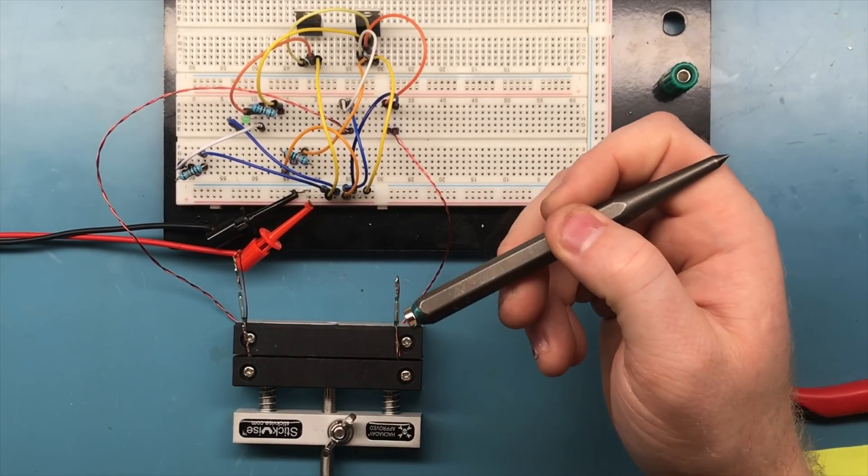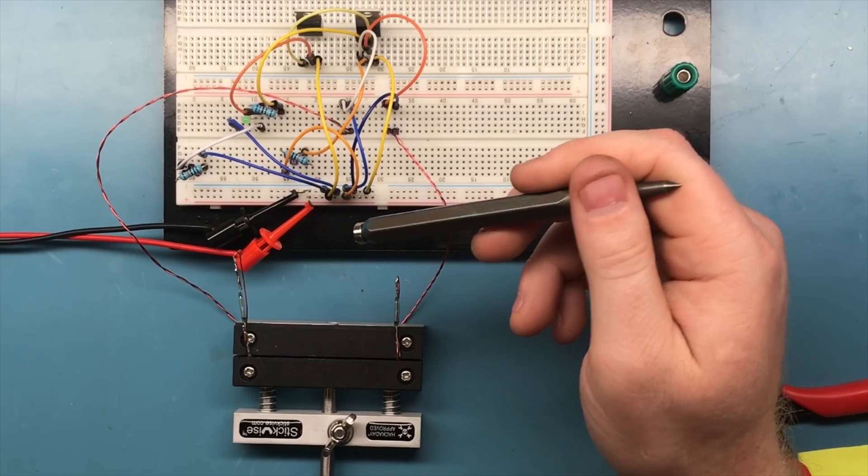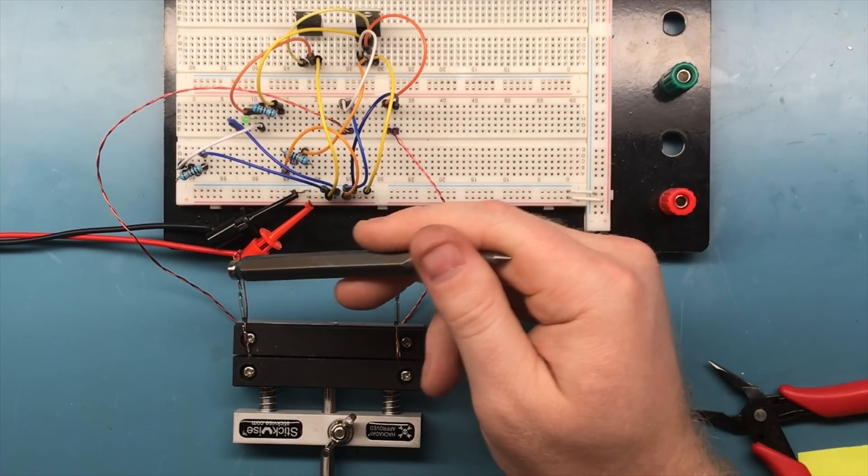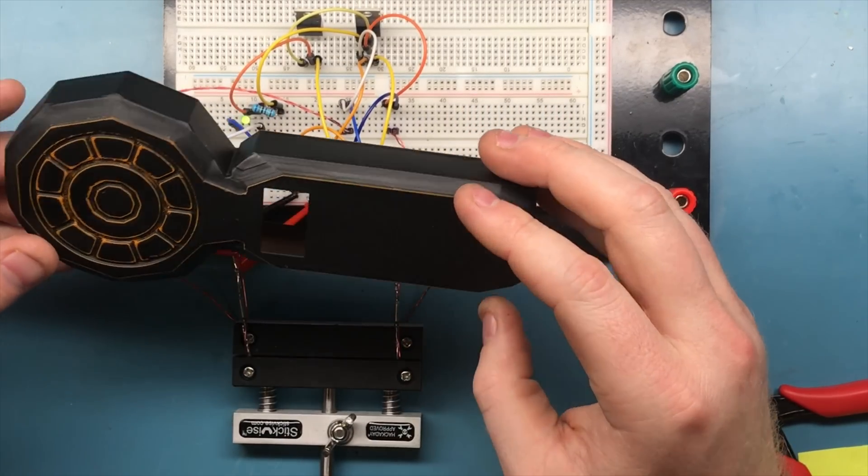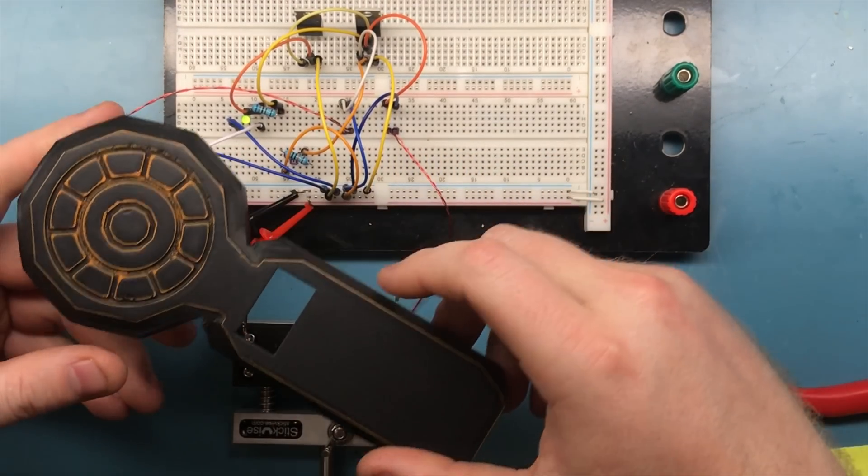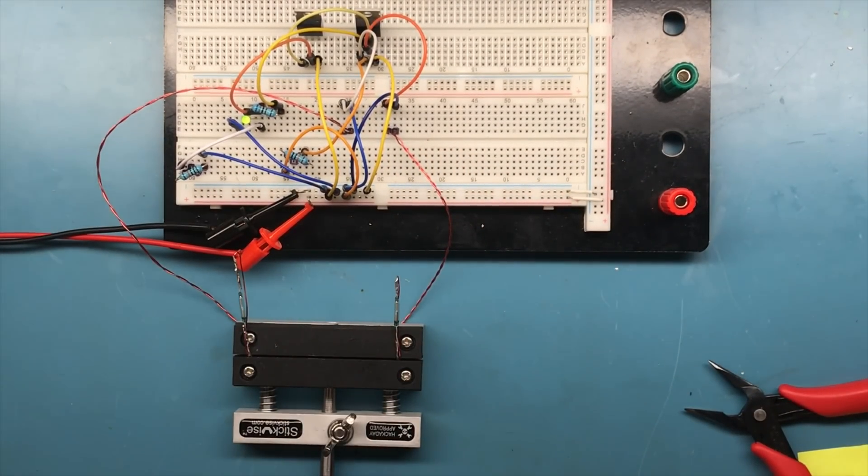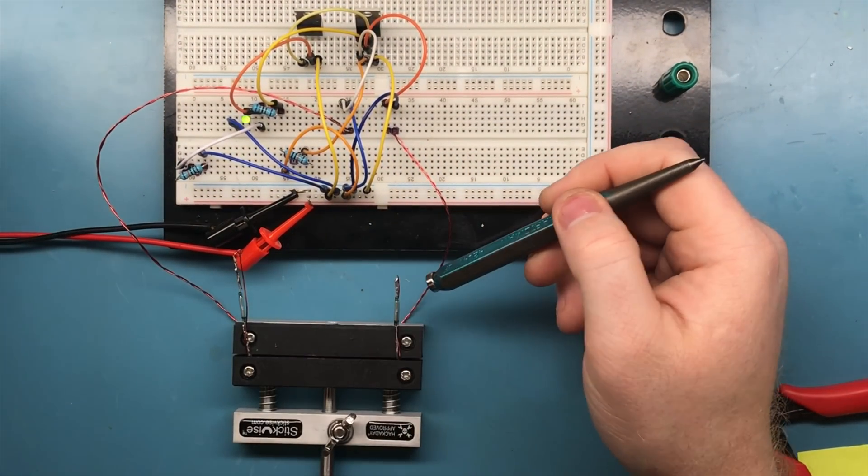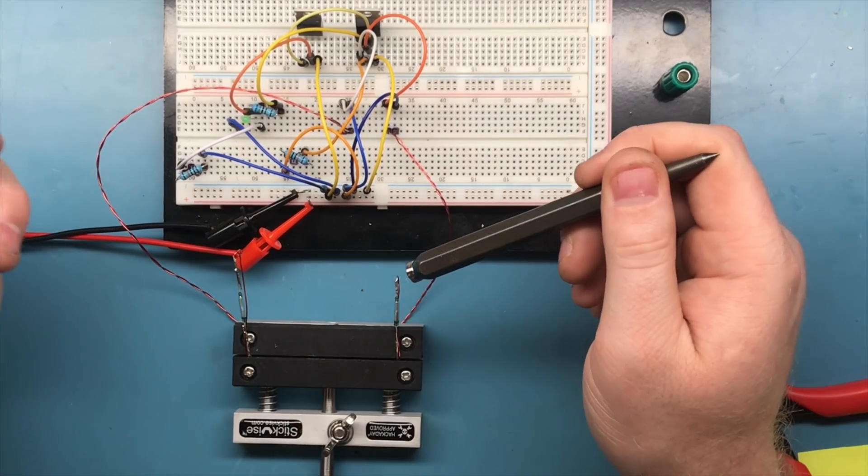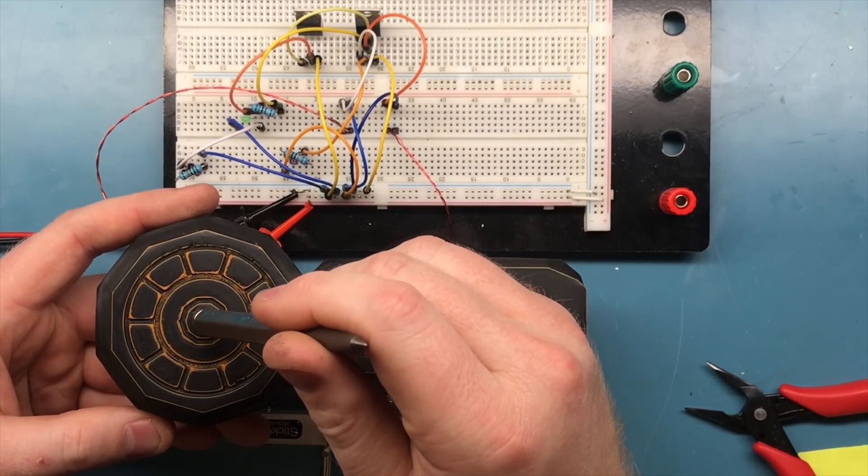My gauss meter is going to have a reed switch in the center that allows the device to turn on and a reed switch down here that turns it off. You'll be able to put the magnet in the center, read your value, and whenever you're done, slide the magnet down and the device will turn off.